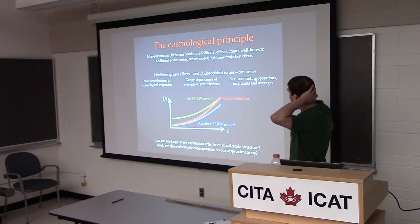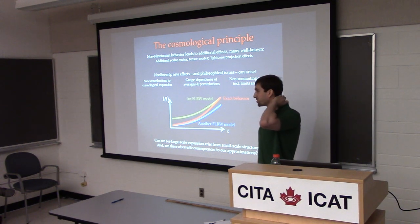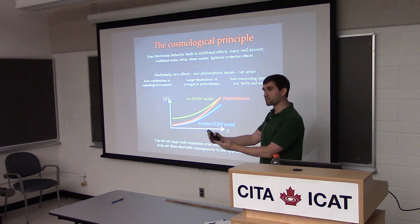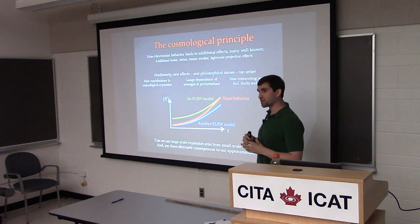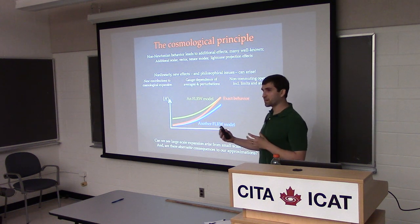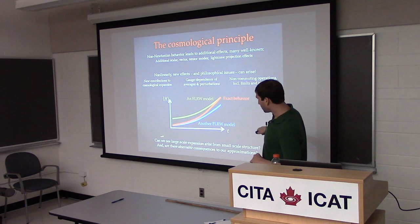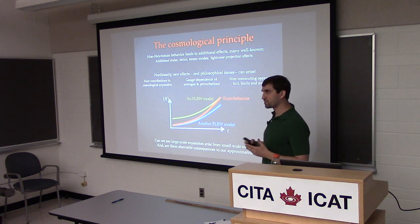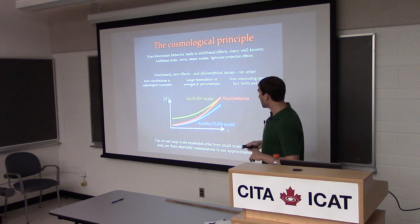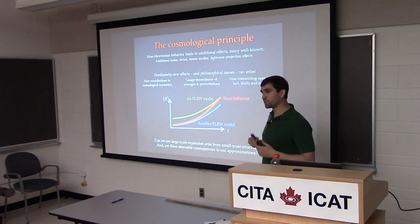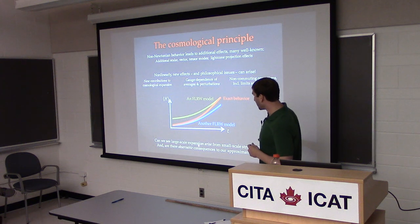Lastly, we also have non-commuting operations — limits and averages are two examples. If I consider measuring luminosity distances as a function of redshift and match that to some FLRW model, that's not necessarily the same model I would infer had I done the same thing with a different distance measure. So there are two questions I'm going to focus on: can we see FLRW-like laws pop out if we have full solutions to Einstein's equations? And assuming an FLRW model plus perturbations is good, are there any new observable consequences in nonlinear order?